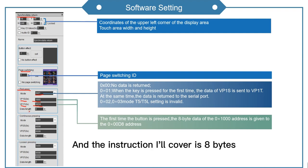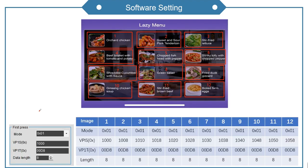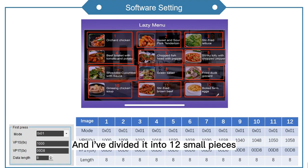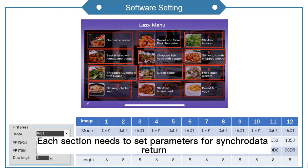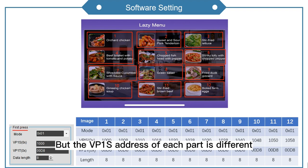The data length setting for the instruction is 8 bytes, so set it to 8. The background image used this time has been divided into 12 small pieces. Each section needs to set parameters for synchro data return — they also select the first press mode, but the VP1S address of each section is different.